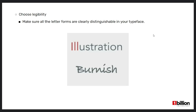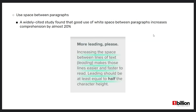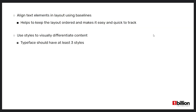The next rule is to choose legibility. Legibility means making sure all letter forms are clearly distinguishable in your typeface. For example, the letter 'l' can look like 'i', and 'n' can look like 'm' when some fonts have poorly specified letterforms. The next rule is to use space between paragraphs. Visual breaks between paragraphs give the eyes a place to rest, which speeds understanding and comprehension. A widely cited study found that the use of white space between paragraphs increases comprehension by almost 20 percent. The space between lines should be at least equal to half of the character height.